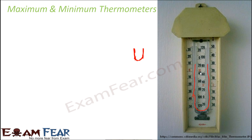The liquid inside a maximum and minimum thermometer is not mercury, unlike clinical thermometers. Mercury has good properties — it doesn't stick to walls, has a high melting point, and has a shiny appearance — but it is very difficult to dispose of because it is extremely poisonous. Therefore, in these thermometers mercury is replaced by alcohol, which has similar properties but without mercury's disadvantages.